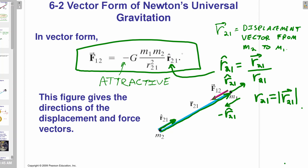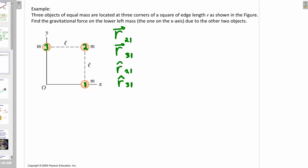Let's do an example problem and show why this form — which might look more confusing because of the indices — is actually helpful. Just remember two things: there's this minus sign, which represents that gravity is an attractive force, and the indices are flipped — force on one by two uses the unit vector pointing from two to one. So: three objects of equal mass are located at three corners of a square of edge length L. Find the gravitational force on the lower right mass due to the other two objects.